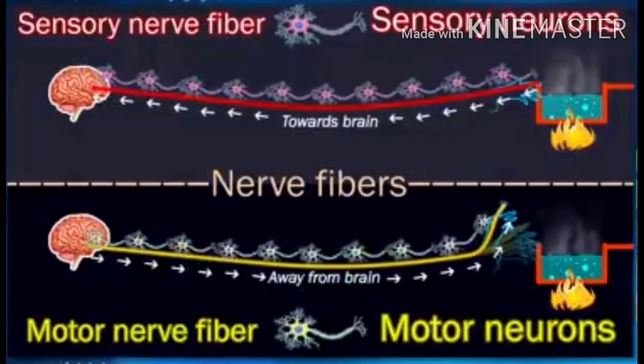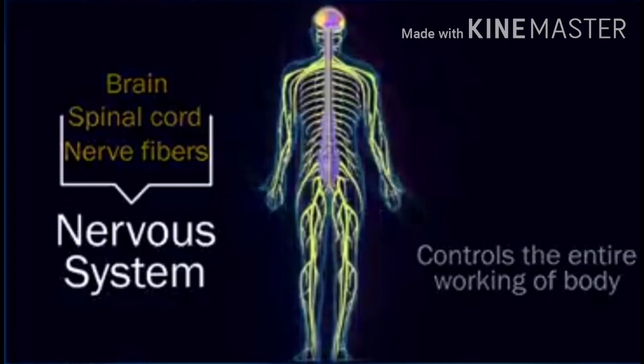We have two types of neurons: sensory neurons and motor neurons. Sensory neurons send messages to the brain — for example, sending the message that an object is hot. Motor neurons receive the message from the brain and respond accordingly — for example, not to touch that object. Based on neurons, there are two types of nerve fibers: sensory nerve fiber and motor nerve fiber. The nervous system, made up of brain, spinal cord and nerve fibers, controls the entire working of the body by receiving and sending signals through motor and sensory nerves.